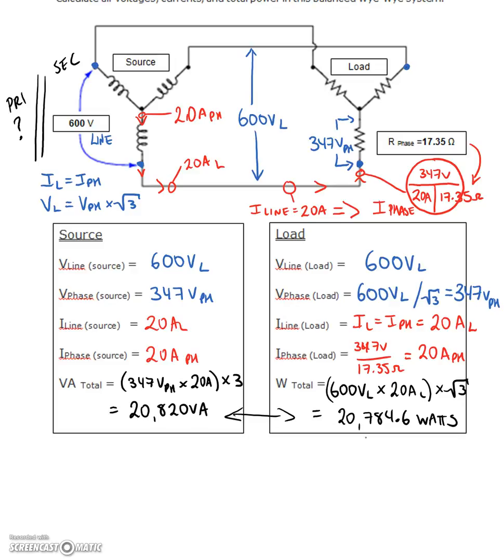So again, we took the source voltage of 600 volts. That was our line voltage. That came across. 347 volts on the phase divided by 17.35 gives us 20 amps on the phase. Phase and line current are identical. So 20 amps comes all the way through. Then we found our total wattage by taking line voltage times line current times root three or phase voltage times phase current times three. And we found that these guys were identical.